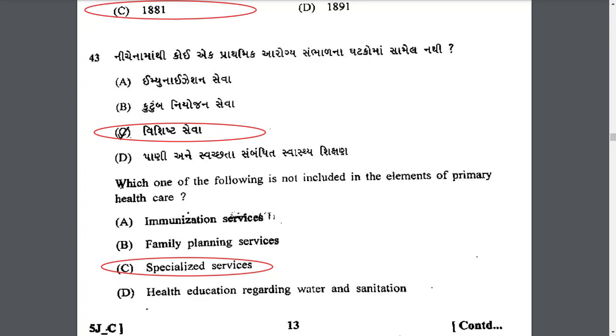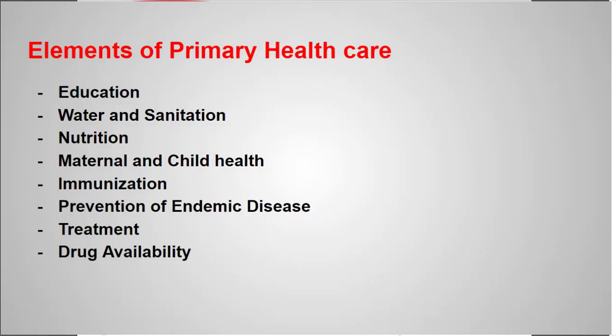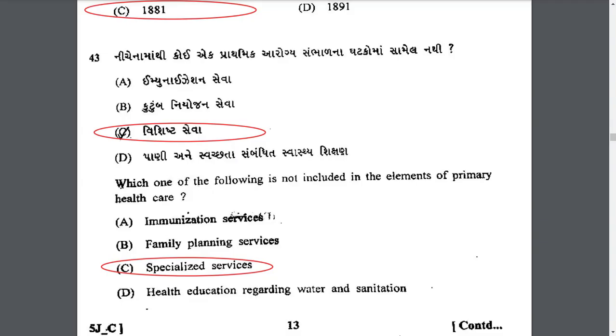Which of the following is not included in the elements of primary health care? The answer is C — specialized services. Elements of primary health care are: education, water and sanitation, nutrition, maternal and child health, immunization, prevention of endemic disease, treatment, and drug availability. Specialized services are not included in primary health care.